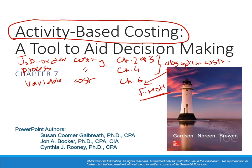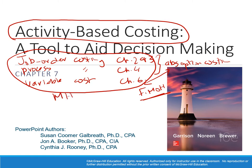The common thing between these three approaches — job order costing, process costing, and variable costing — is that the main activity base or cost driver was either machine hours, labor hours, or both in more complex exercises. Remember that the activity base is what drives the cost. In the equation y = a + bx, as x increases by one unit or one hour, y increases by b, the slope of the function.